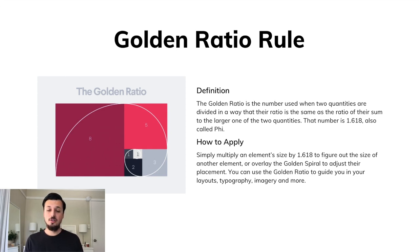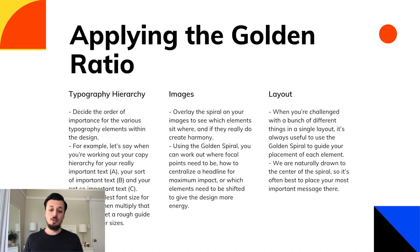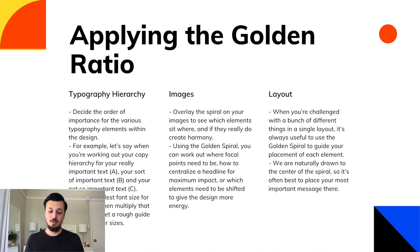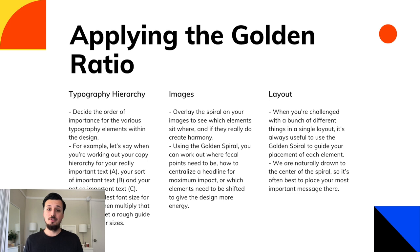You can use the golden ratio to guide layouts, typography, imagery, and more. For typography, decide the order of importance of your type elements. If you have three font elements — A, B, and C — and C is set at a 10-point font, multiply by 1.618 to get a rough guide for larger elements. For images, overlay the spiral to see if elements create harmony and where focal points need to be. For layout, the golden spiral guides element placement — we're naturally drawn to the center of the spiral, so place your most important messages there.